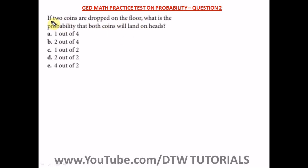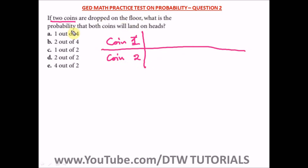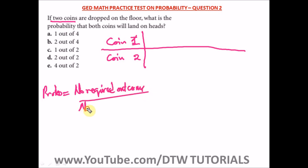Question two is quite similar to question one. It says: if two coins are dropped on the floor, what is the probability that both coins will land on heads? Let's call them coin one and coin two. Remember, the formula for probability is: number of required outcomes over number of possible outcomes.